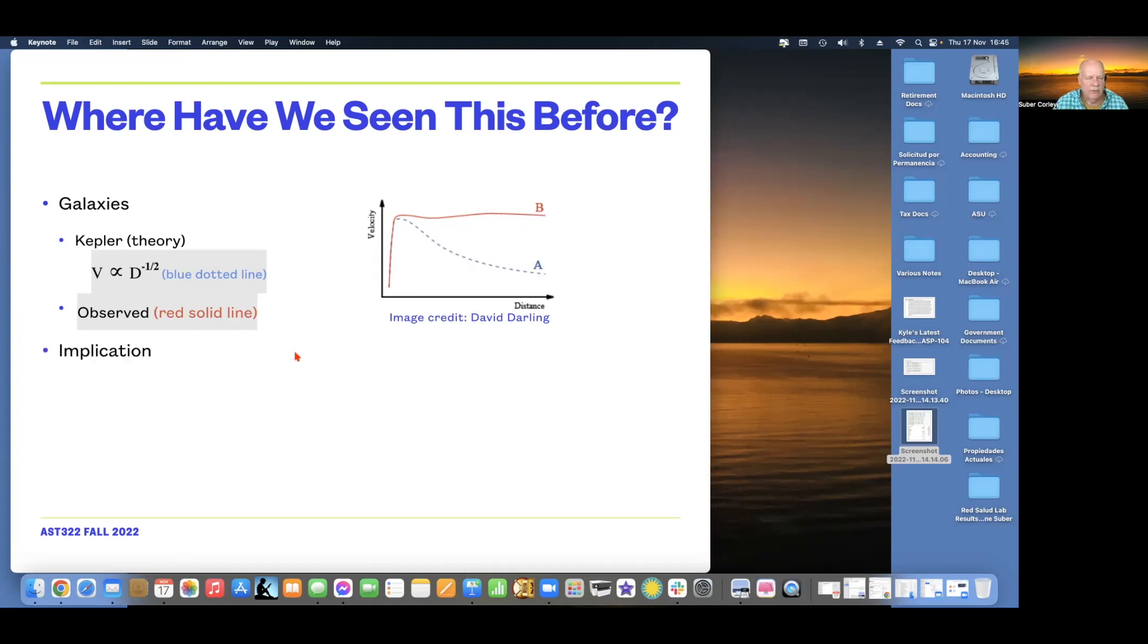So, we know from our work this year that the implication here is, of course, that much of the matter in galaxies is dark matter. That's what keeps the speed of the rotating stellar systems going.